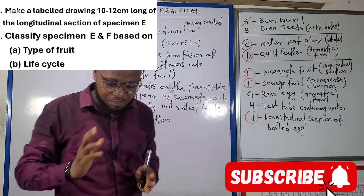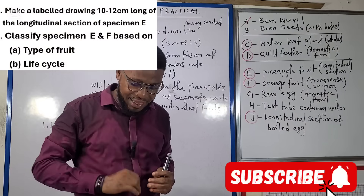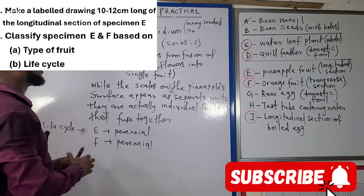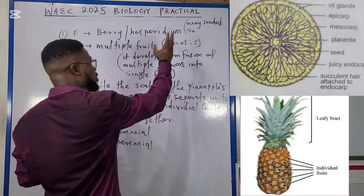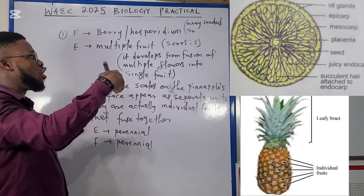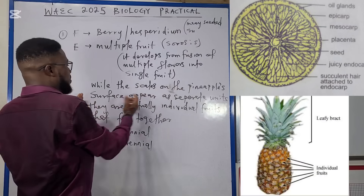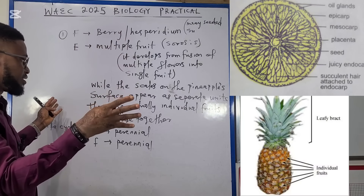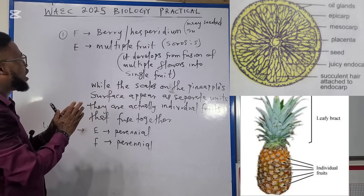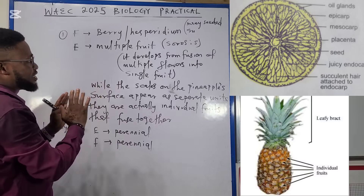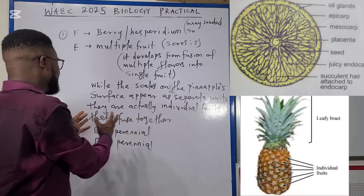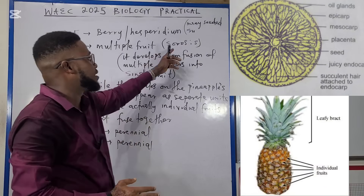The next question says: classify specimen E and F based on the type of fruit and the life cycle of the fruit. Specimen E, the pineapple, is a multiple fruit — more specifically called sorosis — because it develops from the fusion of multiple flowers into a single fruit. The scales on the pineapple surface appear as separate units and are actually individual fruits fused together to form the pineapple.